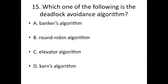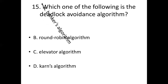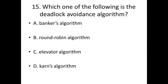Fifteenth bit. Which one of the following is the deadlock avoidance algorithm? Option A: Banker's algorithm. Option B: Round Robin algorithm. Option C: Elevator algorithm. Option D: Kern's algorithm. Answer: Option A, Banker's algorithm.